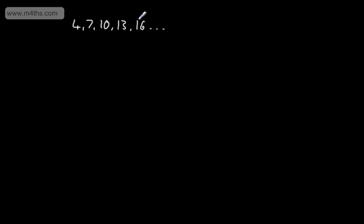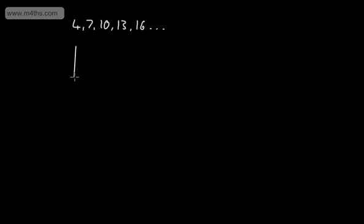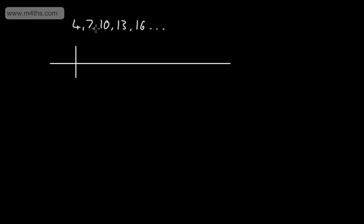If we look at this sequence, we can see that it's going up by 3 each time. What we're going to do is find the nth term of the sequence. A common misconception is that the nth term for this particular sequence is n plus 3. That is not the case.